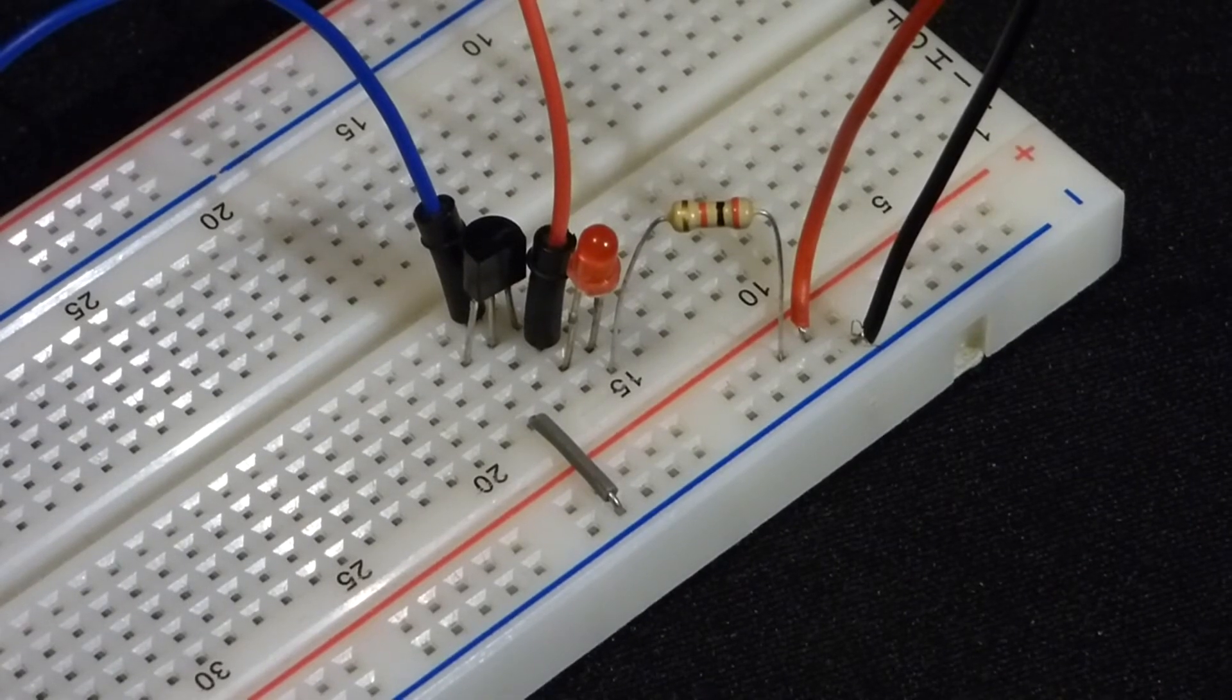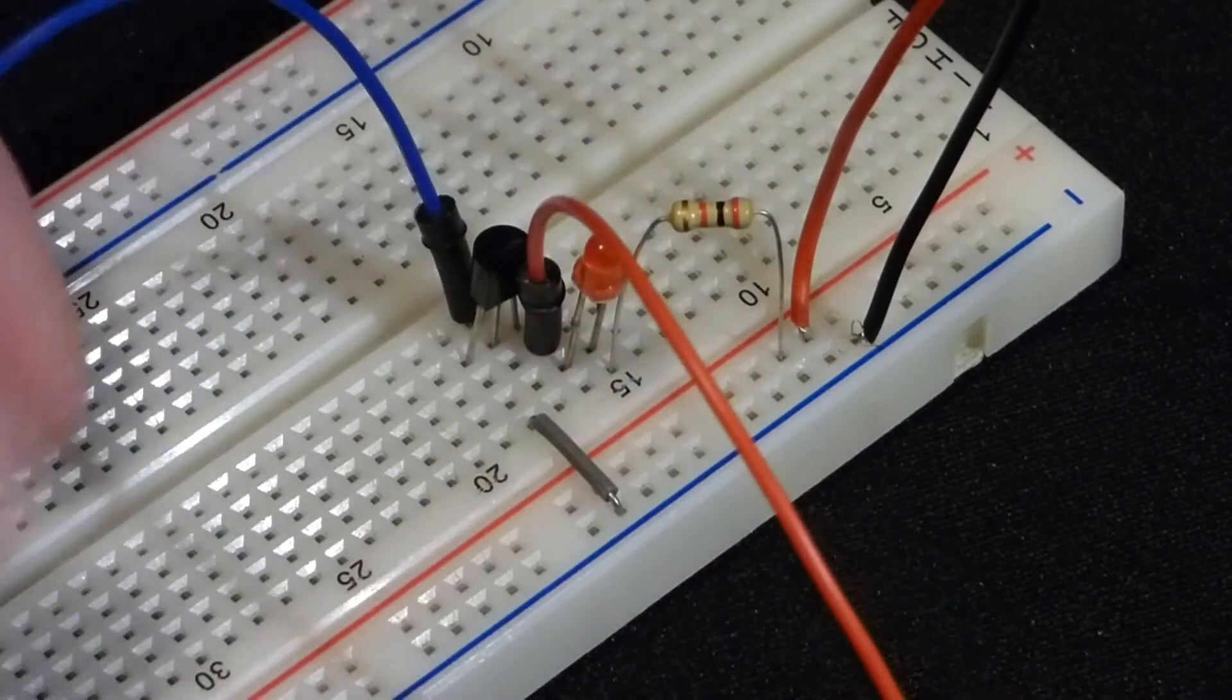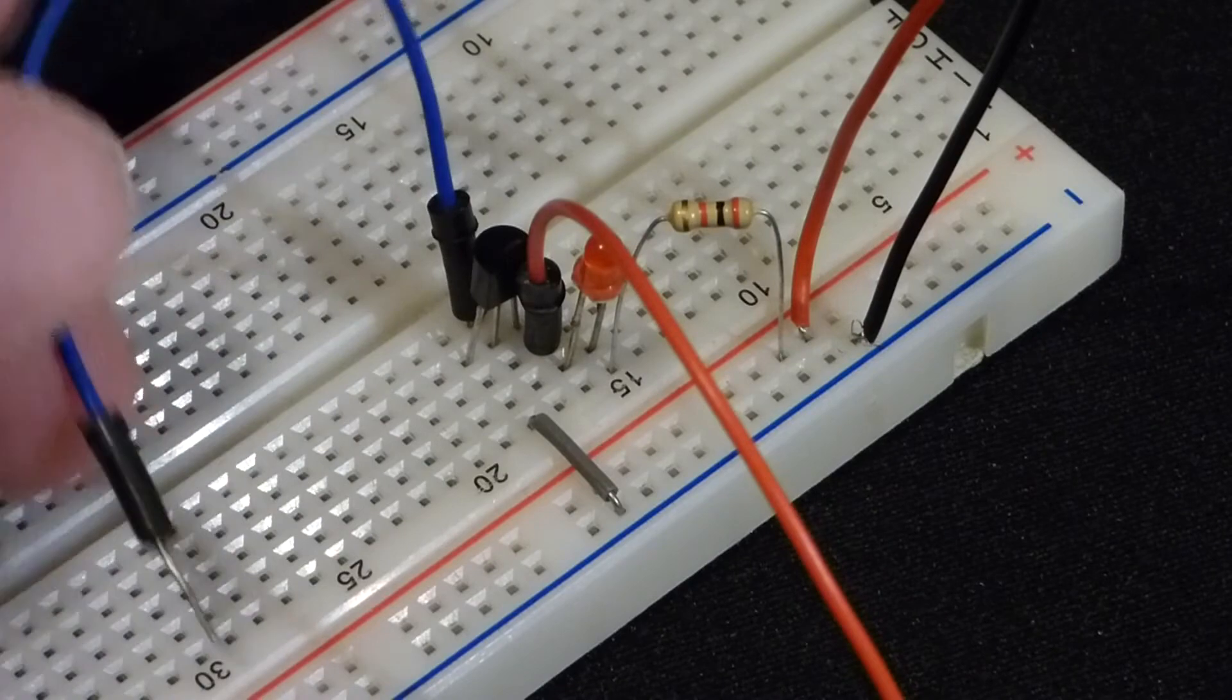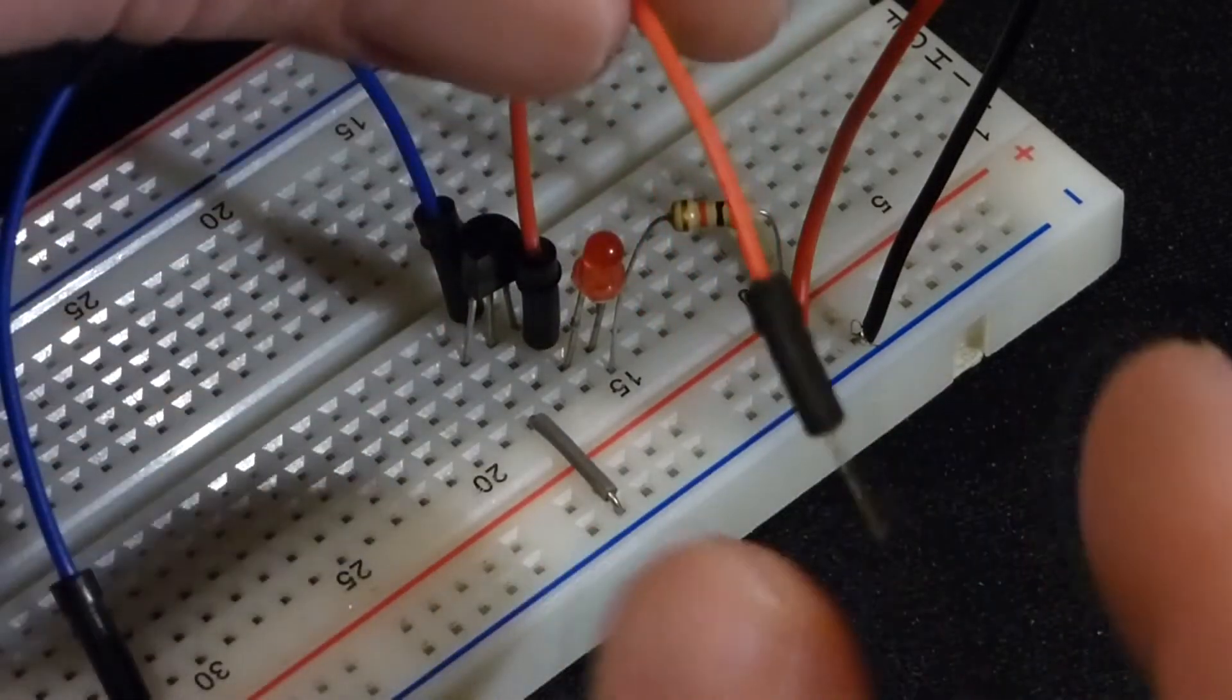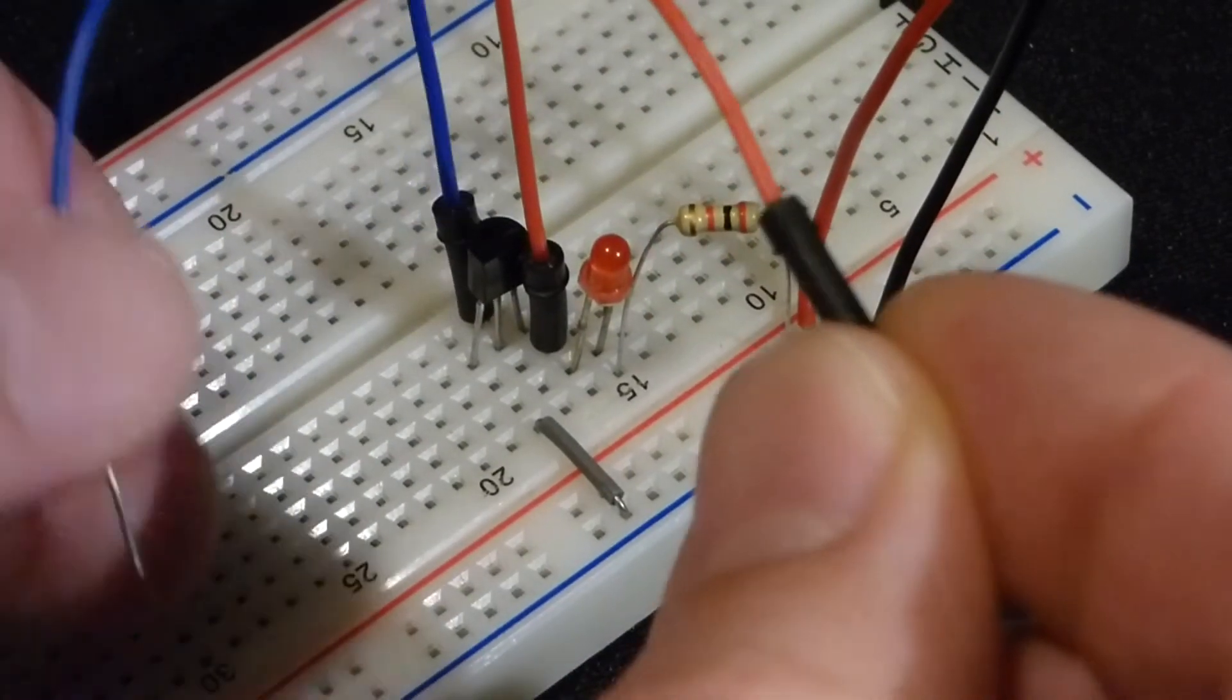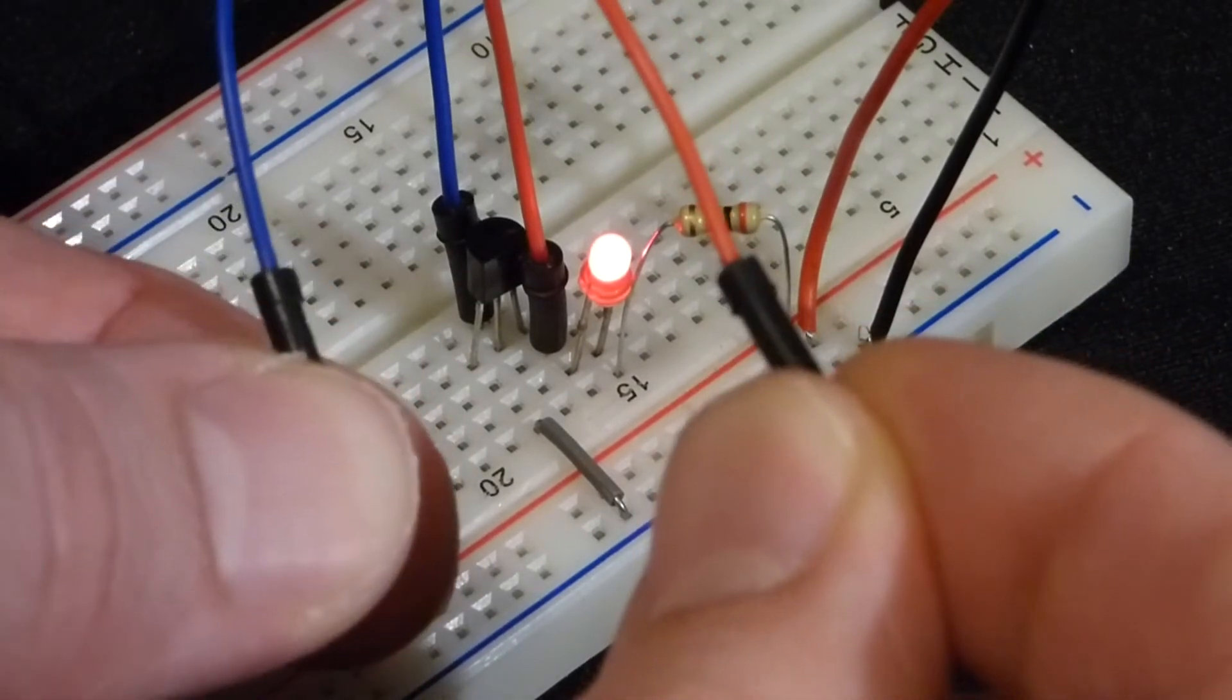And now to make that connection we're going to have to touch these two wires. Now we're not going to touch them together. We could do that too. Instead I'm going to touch this wire with one hand and then this wire with the other hand.